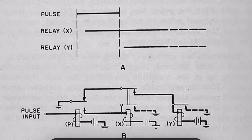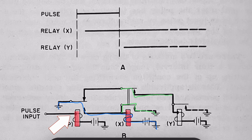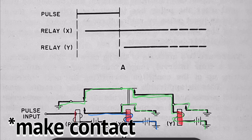When we send the first pulse, P operates, closing ground to operate X. This pulls in the two make contacts of X. The first make contact causes X to lock to its own ground. The second contact closes the path to Y. But Y will not operate yet, because I'm still pushing the button down, which means P is still in its operated state. When I release the button, P will come down, closing ground through its back contact. This ground path is now completed through relay X, which operates Y. Y again locks up through its own break contact.